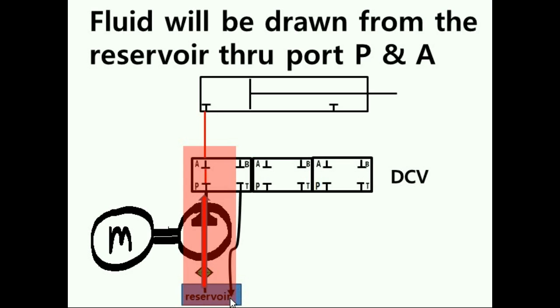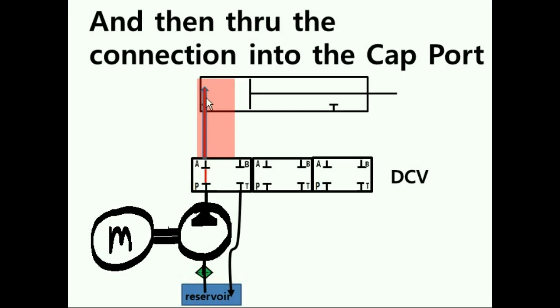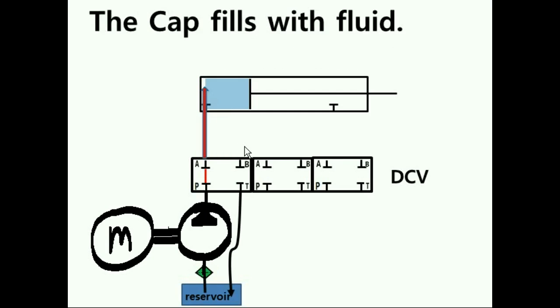Fluid will be drawn from the reservoir through port P and then port A, and then through the connection into the cap port. The cap fills with fluid.